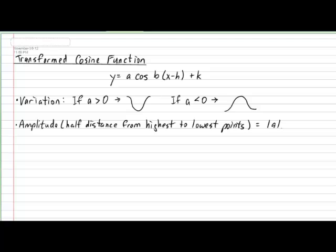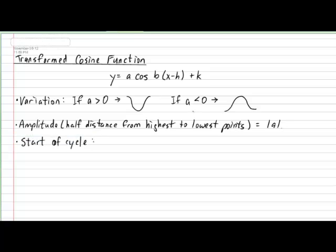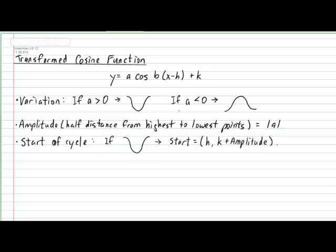The next element to consider is the actual start of the cycle. The start of the cycle is dependent on whether the cycle is a dip or a hump. If the cycle turns out to be a dip, then the coordinate for the start of the cycle will be represented by H and K plus the amplitude. If however your cycle turns out to be a hump, then the start coordinate of the cycle will be represented by H and K subtract the amplitude.